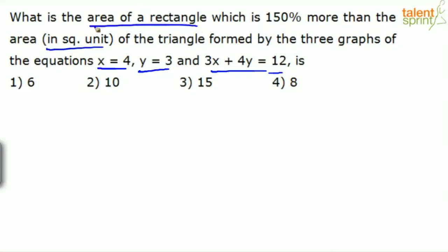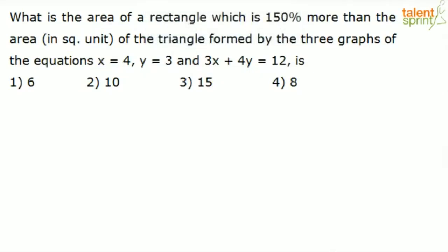To find out the area of a rectangle, you first need to know the area of the triangle. The area of the triangle has to be measured. The three graphs have been given — the triangle is found by three lines, and the equations x equals to 4, y equals 3, and 3x plus 4y equals 12 are given. So let us first find out the area of the triangle.